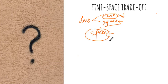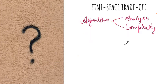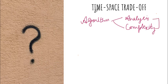Nowadays, computers have large space, so space is no longer a limitation. We can go with algorithms that take less time. The knowledge of time-space trade-off will benefit you in understanding algorithm analysis and complexity, which we are going to discuss in future videos in this data structures series.